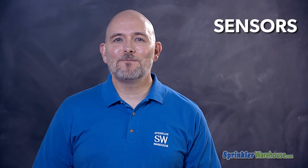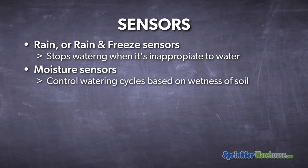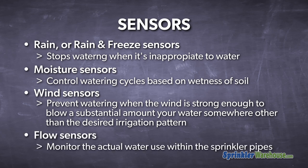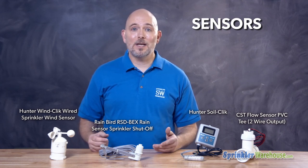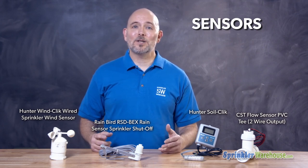Sensors are another way to save money and protect your landscape from over- or underwatering. Rain sensors — or rain and freeze sensors — put watering on hold when the weather is inappropriate for watering. Moisture sensors determine the level of moisture in the soil, and wind sensors prevent watering when it's windy enough to blow a substantial amount of water onto the neighbor's lawn. Flow sensors are installed into a section of irrigation pipe and monitor your water usage. They can alert you to a leak or a broken valve, saving you money and even protecting your landscaping. You'll need an appropriate smart controller that can communicate with a flow sensor, as not all controllers work with all flow sensors.